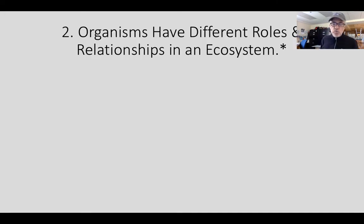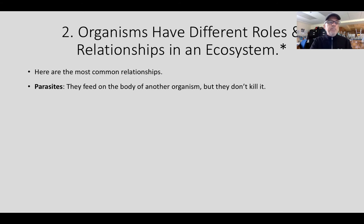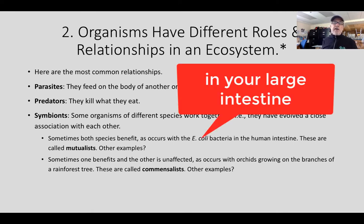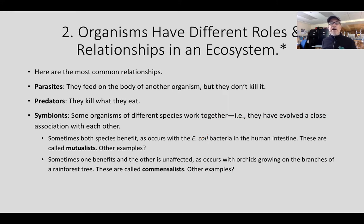Now we're on to rule two: organisms have different roles and relationships in an ecosystem. Here are the most common relationships to know. Parasitism: a parasite feeds on the body of another organism — it's a heterotroph — but doesn't kill it. Predation is like parasitism except the predator kills what it eats. Symbiosis is when two organisms of different species work together through a close evolved association. In some cases both species benefit — for example, E. coli bacteria in your gut provide protection from disease and vitamin K, while we provide them with food, warmth, and a safe environment to reproduce.